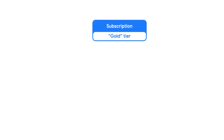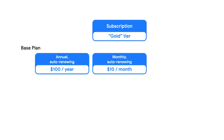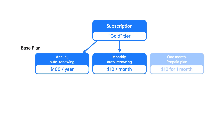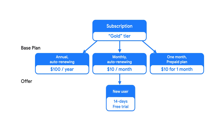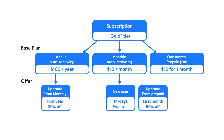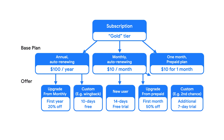Say you want to sell a subscription with different base plan options for users: an auto-renewing annual or monthly plan and a one-month prepaid plan. You also want to incentivize subscribers through offers at the different stages of the subscription lifecycle, such as an acquisition or upgrade offer. For ultimate flexibility, you can create custom offers where you decide the business logic.